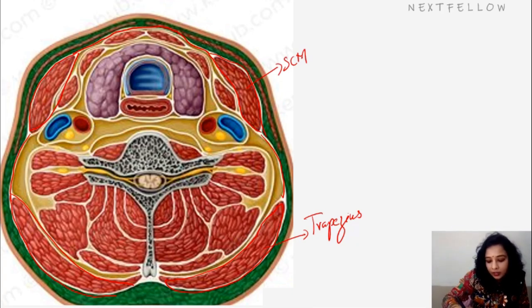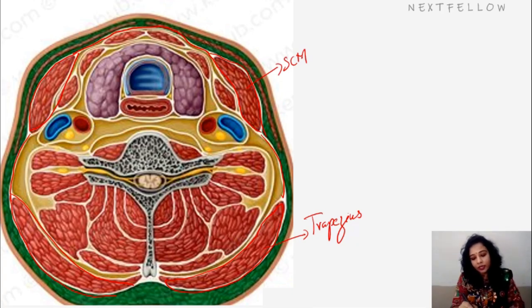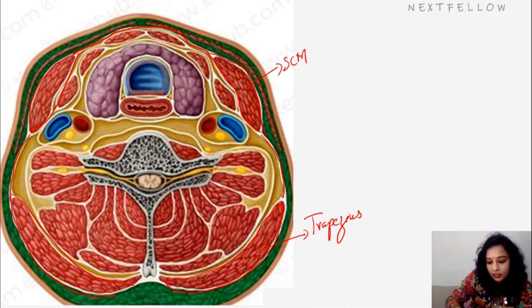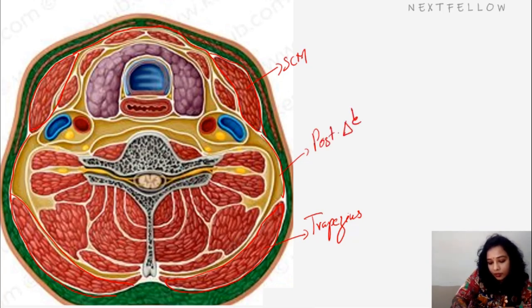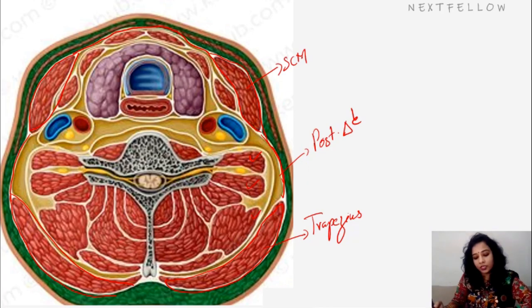It forms the roof of the posterior triangle, and these muscles we can see are forming the floor of the posterior triangle of the neck.